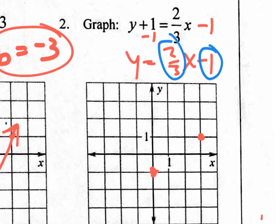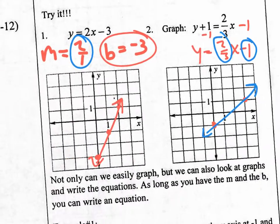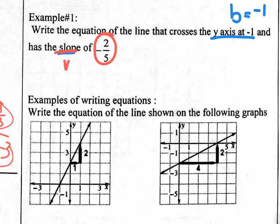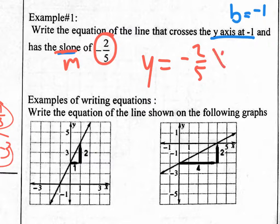With those two dots, draw your line and put arrows — you've graphed it, super easy. They could also ask you to write the equation of a line. For example: a line that crosses the y-axis at negative 1, so B equals negative 1, and has a slope of negative 2/5, so m equals negative 2/5. If you want to write that equation, use y equals mx plus B.